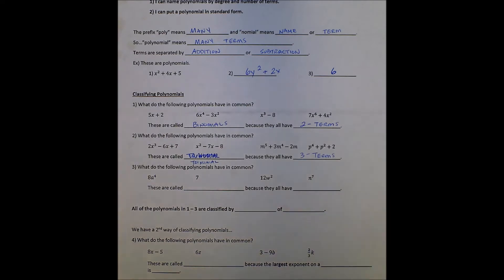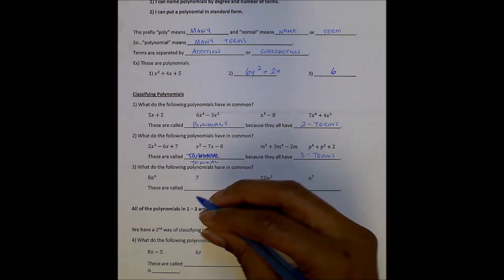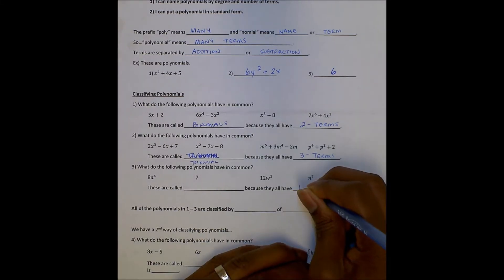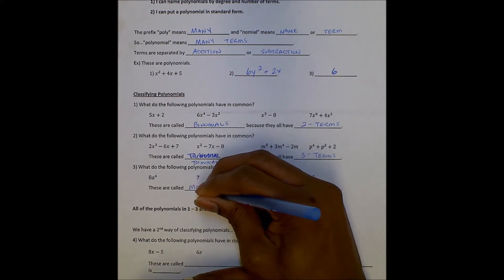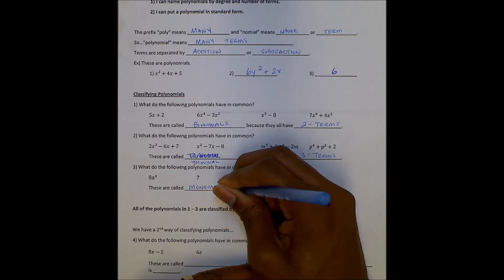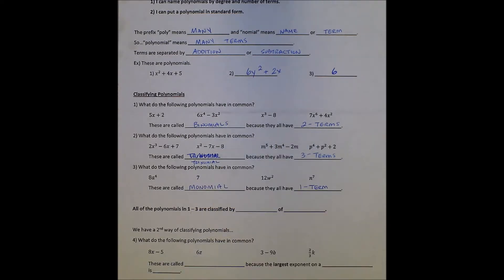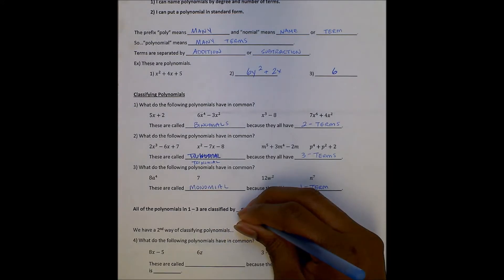And what do the following terms have in common here? Hopefully you see that there's no addition and subtraction separating any terms like there were for binomials and trinomials, so there's only one term. And that is called a monomial. Monopoly, monogamy, monocle. Mono means one.